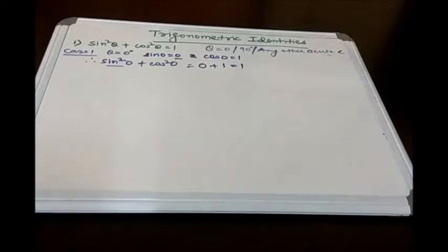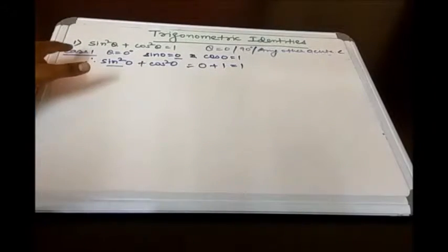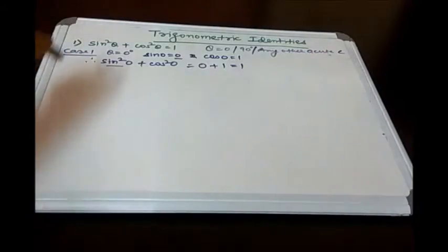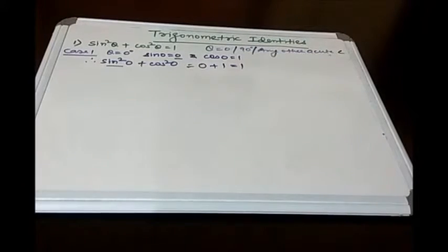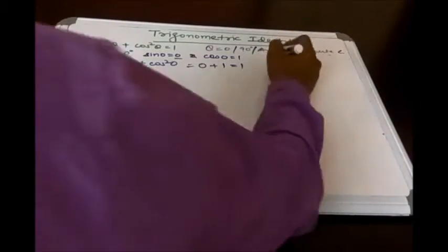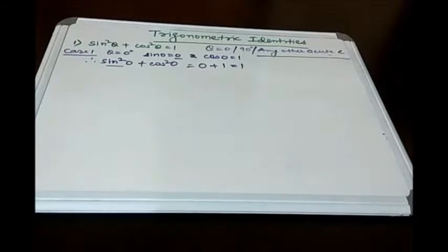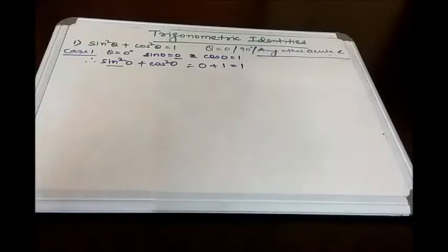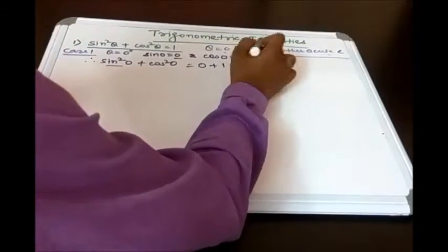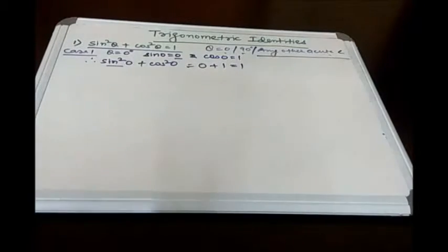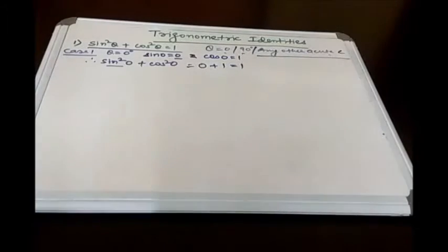While proving the identity, we have to show it holds true for all values of theta. We break it into cases because we know the specific values at 0° and 90°. We know sin 90°, sin 0°, cos 90°, and cos 0°. We also know values for 30°, 45°, and 60°, but those will be covered under the general acute angle case using a right-angle triangle.